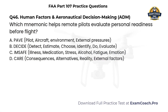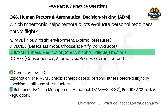Human Factors and Aeronautical Decision-Making. Which mnemonic helps remote pilots evaluate personal readiness before flight? A. PAVE — Pilot, Aircraft, Environment, External Pressures. B. DECIDE — Detect, Estimate, Choose, Identify, Do, Evaluate. C. I'M SAFE — Illness, Medication, Stress, Alcohol, Fatigue, Emotion. D. CARE — Consequences, Alternatives, Reality, External Factors. Correct answer: C. The I'M SAFE checklist helps assess personal fitness before flight by checking health and stress factors.